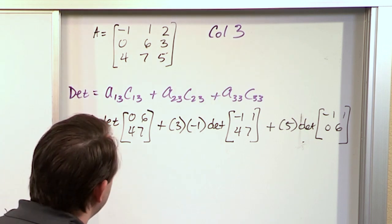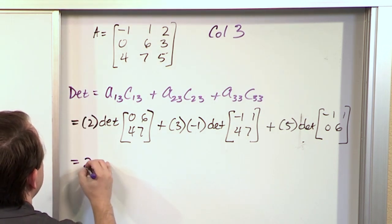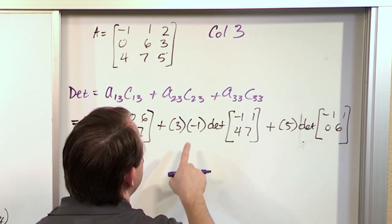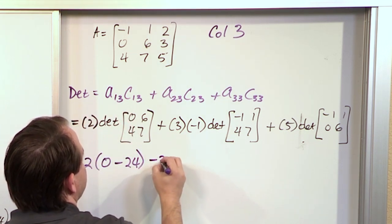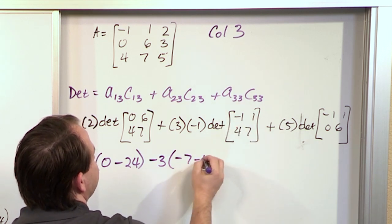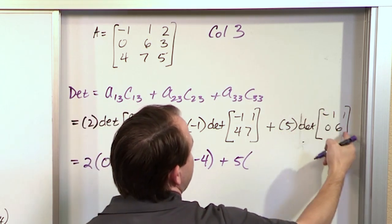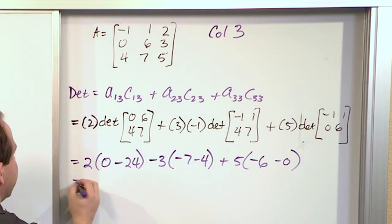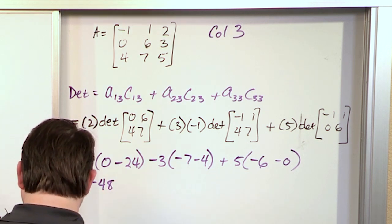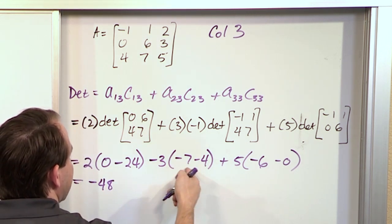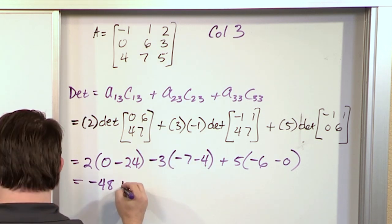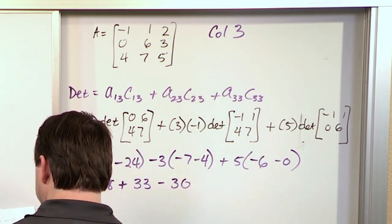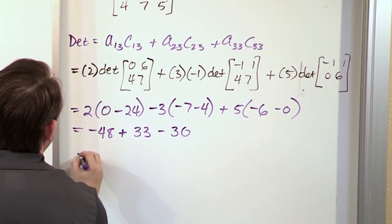Computing: two times (0 minus 24) = two times negative 24 = negative 48. Then negative three times (negative 7 minus 4) = negative three times negative eleven = positive thirty-three. Then five times (negative six minus zero) = five times negative six = negative thirty. So we have negative forty-eight plus thirty-three minus thirty, which equals negative forty-five — exactly the same answer.